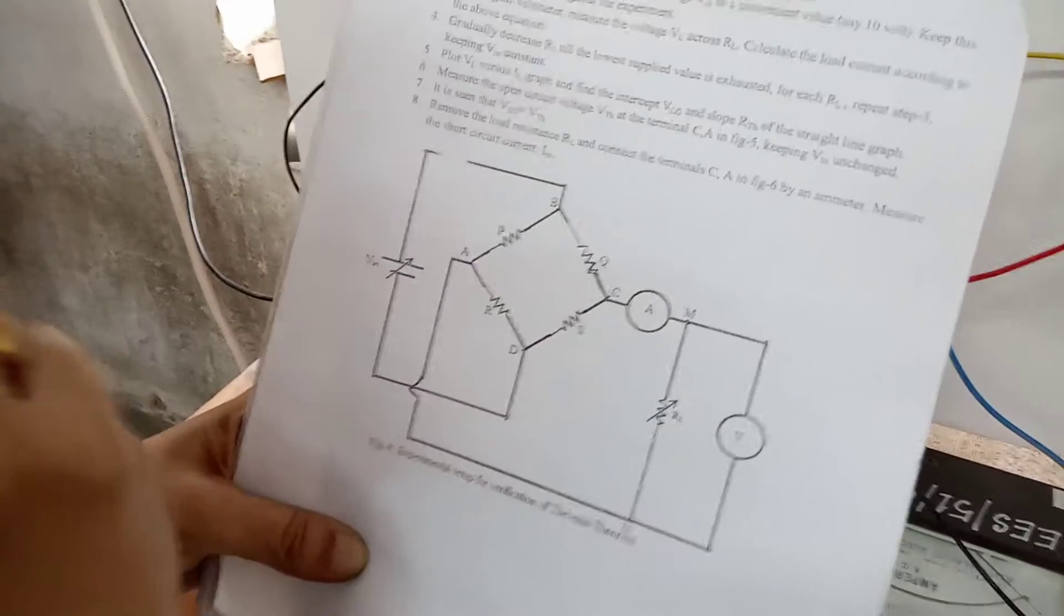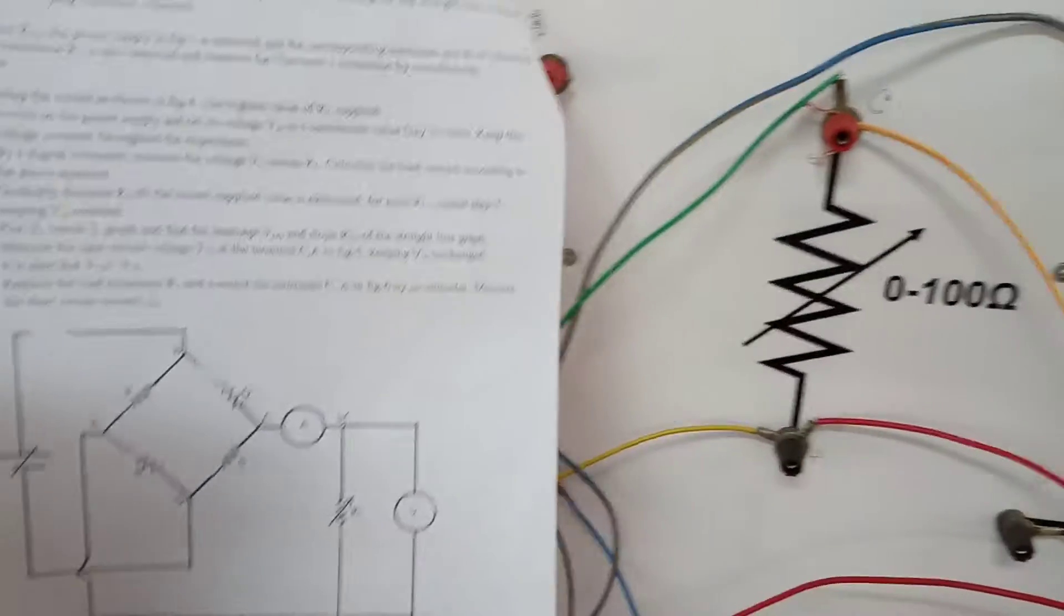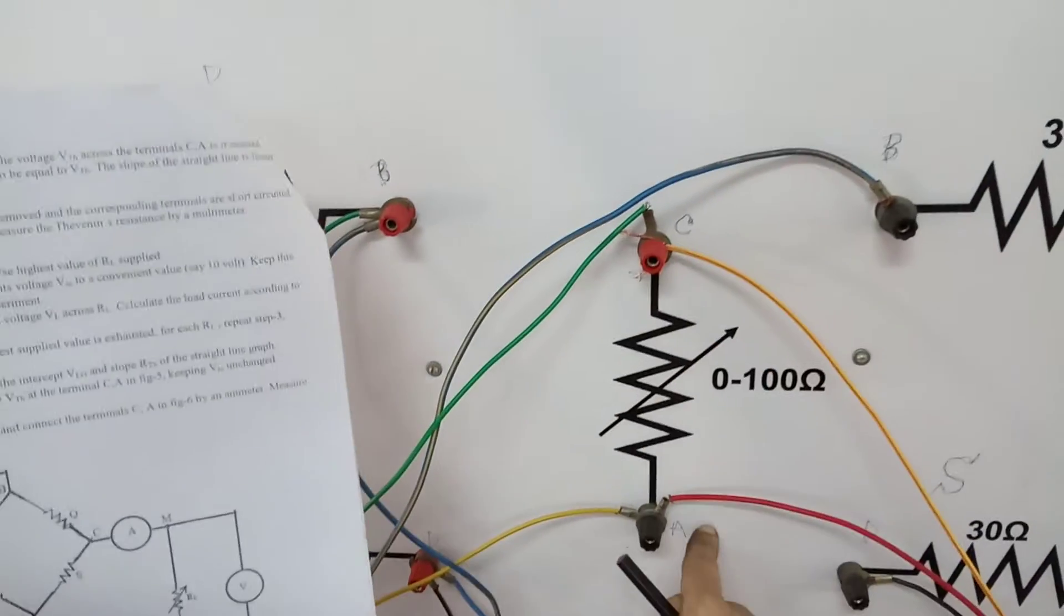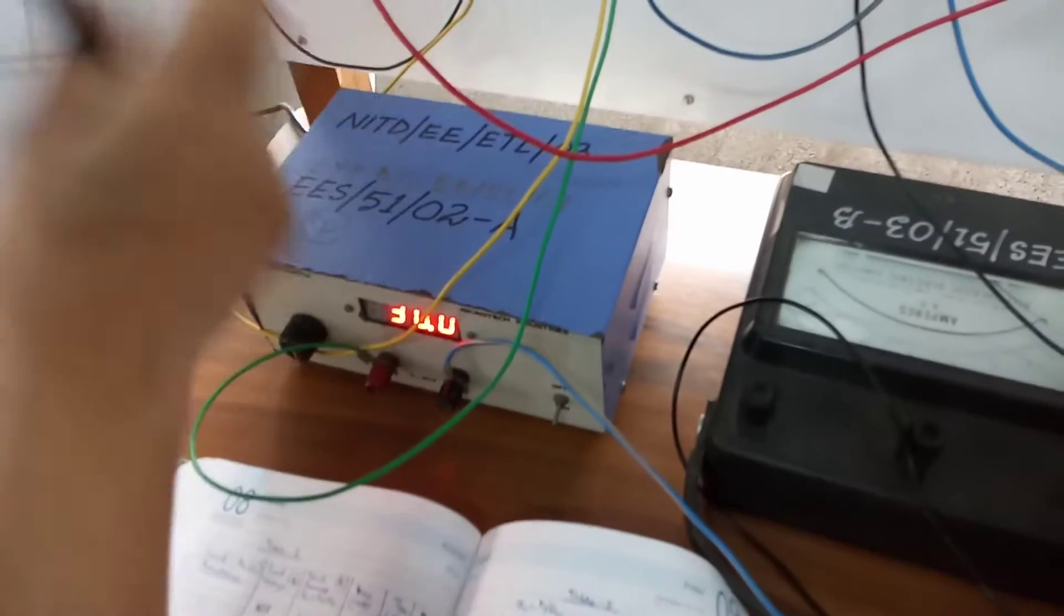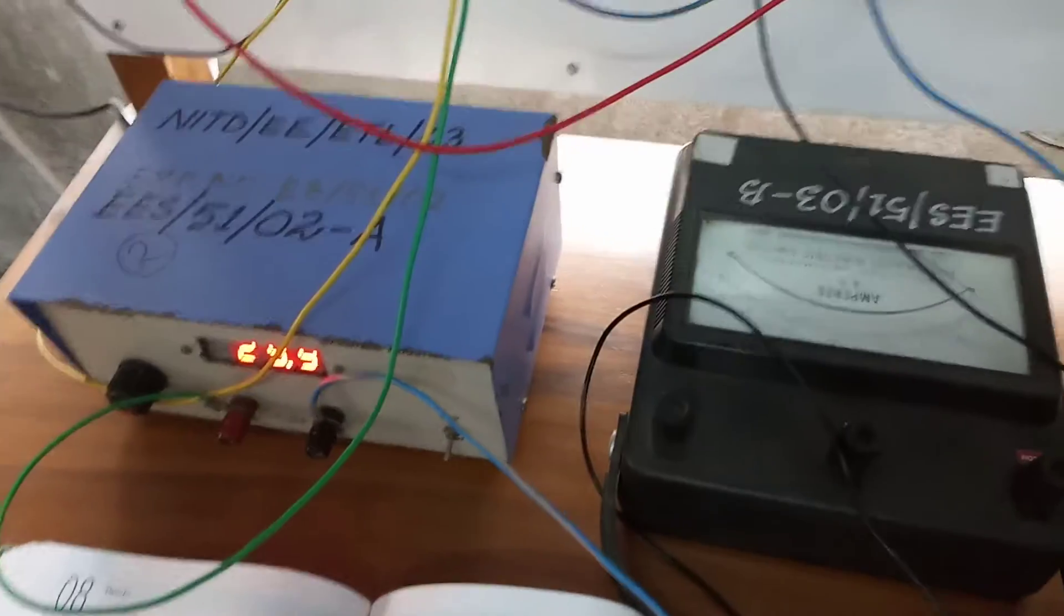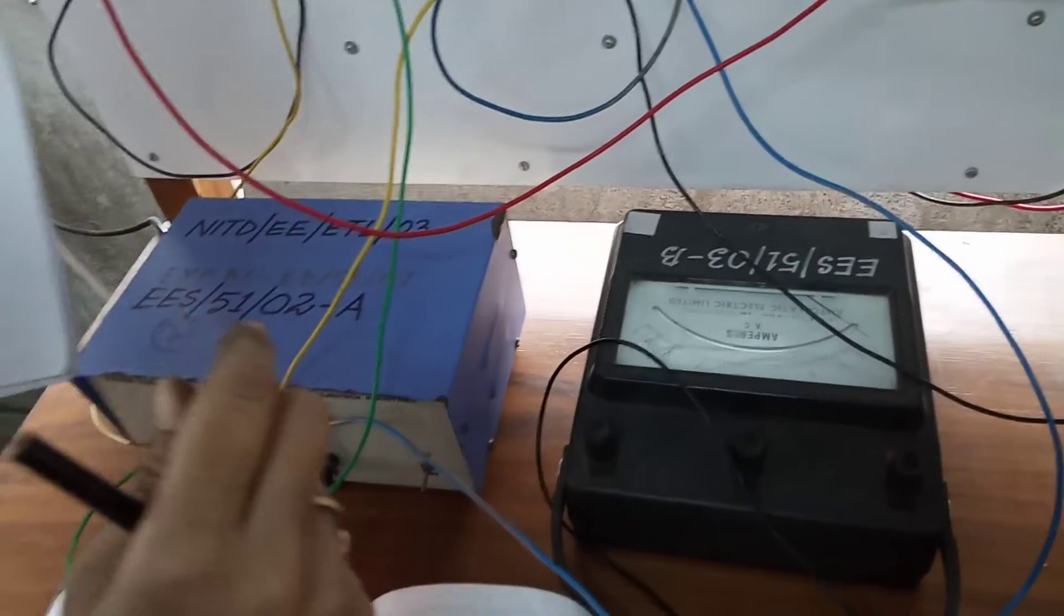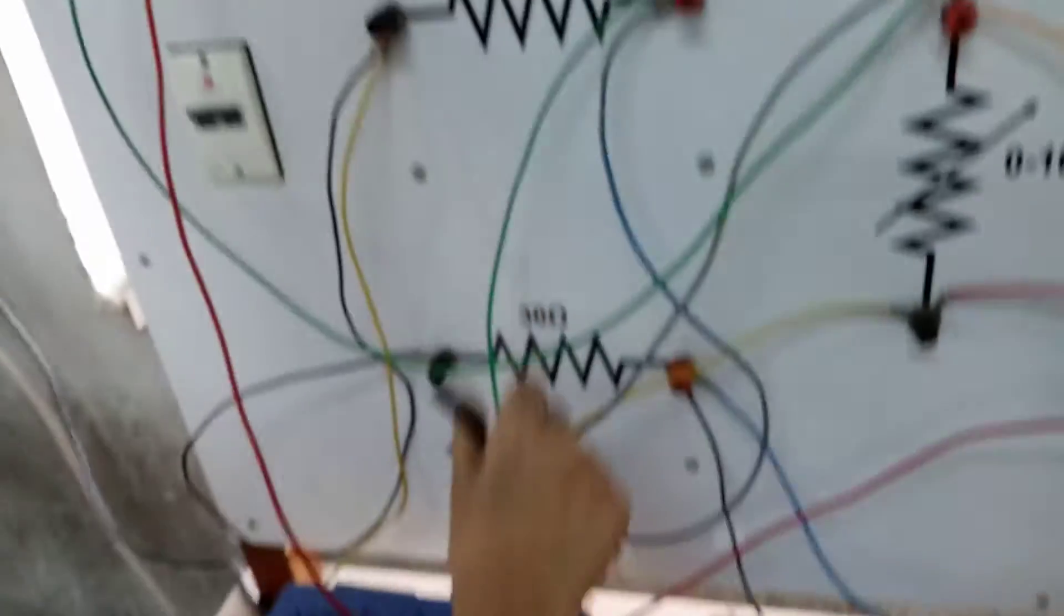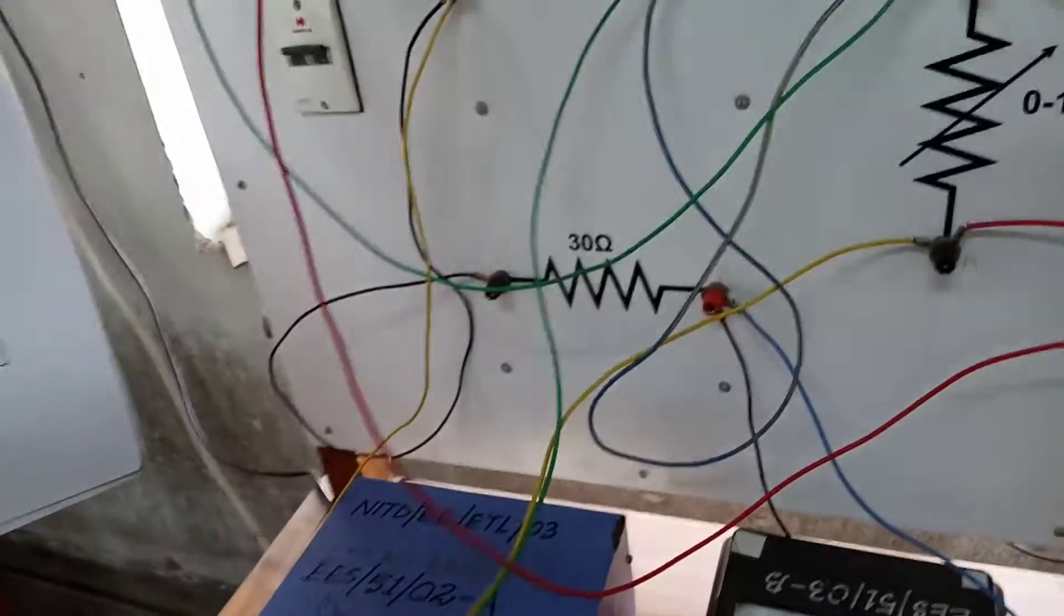Now one thing is left, that is RL, the load resistance which is variable. So this one is the variable resistance which is this rheostat. And this is connected across C and A. So this is C and this is A, and the voltage source which is considered to be this. This one is connected across B and D. So let me show you how the connection is being done.